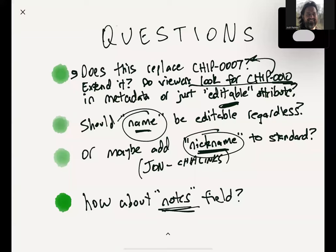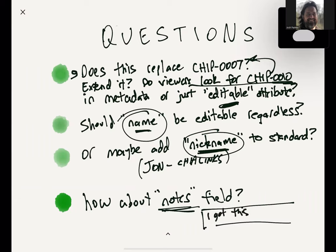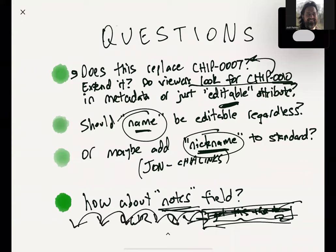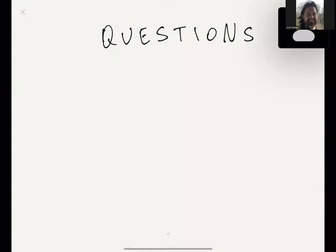Another idea: a notes field for all NFTs around provenance. You could put something like 'I got this the day Ethereum crashed' — put a little story of when you got the NFT — and that goes on-chain and is carried forward in provenance to the next collector. They could blank it out and put their own story, or add to it. Even if they blank it out, it's still in the URI history on-chain, so a viewer could go back in time and look at the notes people have put on-chain over time.